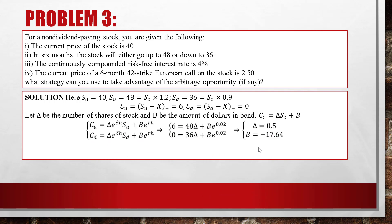Substituting numbers: 6 = 48δ + B × e^(0.02), and 0 = 36δ + B × e^(0.02). Solving for delta and B: delta = 0.5 and B = −17.64, leading to C0 = 2.36. So the theoretical price is 2.36 but the market price is 2.50.